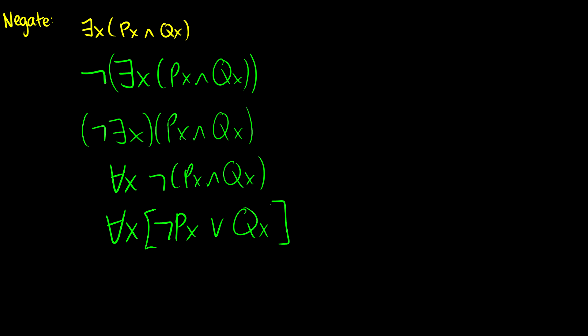If there does not exist an x such that P(x) ∧ Q(x) — with the negation in front — that's the same as saying for all x it's either not P(x) or not Q(x). For instance, if there is not a single number that is both odd and even, that's like saying all numbers are either not odd or not even. That English translation may help you understand the relationship.